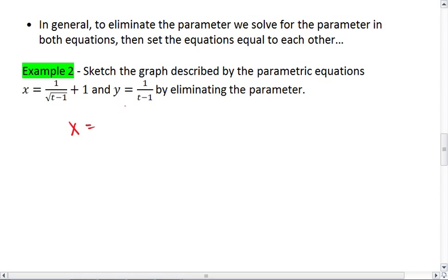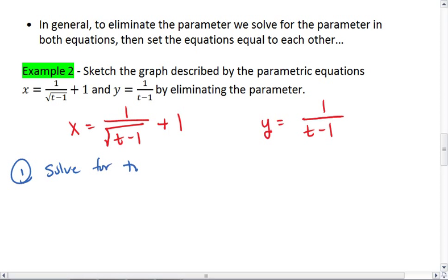So first we have x equals 1 over the square root of t minus 1 plus 1 at the end, and y equals 1 over t minus 1. First step, solve for the parameter, in this case t.